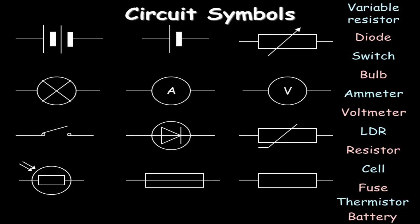Going on to current electricity, you need to be familiar with these 12 circuit symbols. So quickly going through them, we've got a cell which you must have to get a current.